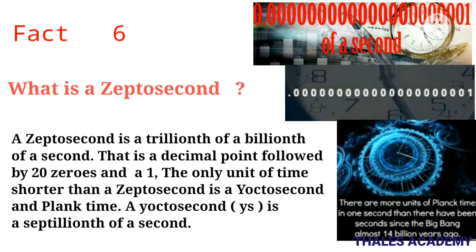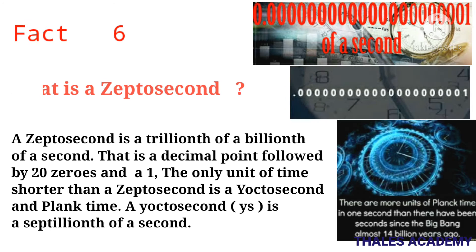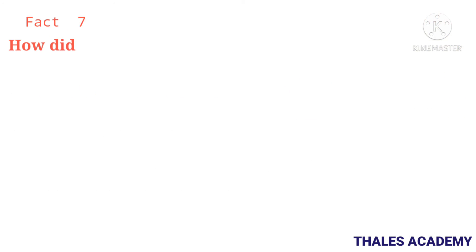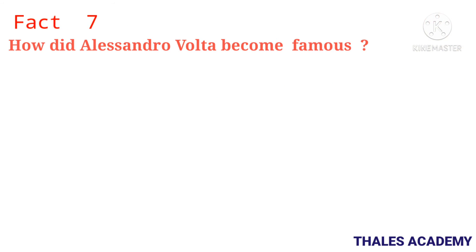Fact 6: What is a zeptosecond? A zeptosecond is a trillionth of a billionth of a second — that's a decimal point followed by 20 zeros and a one. The only units of time shorter than a zeptosecond are a yoctosecond and Planck time. A yoctosecond is a septillionth of a second.